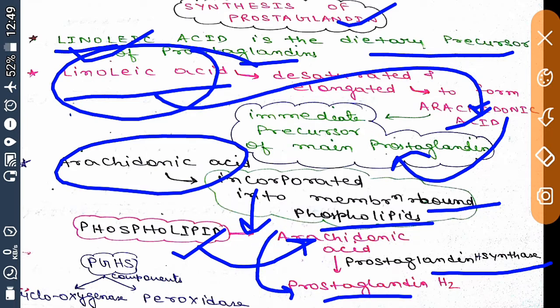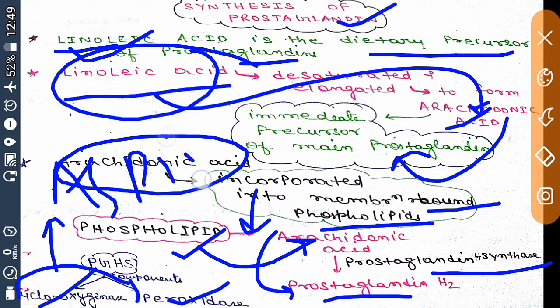Prostaglandin H-synthase contains two components: cyclooxygenase and peroxidase. Cyclooxygenase is inhibited by aspirin. This is the basic synthesis pathway of prostaglandin.